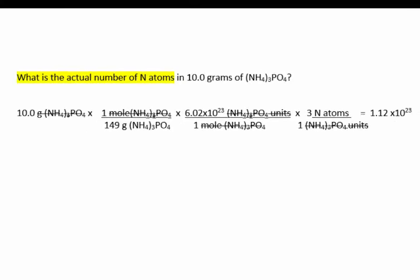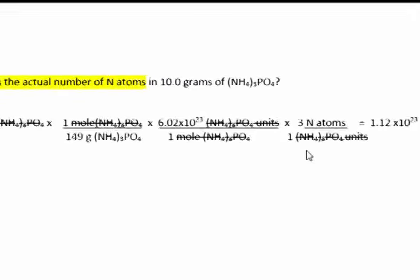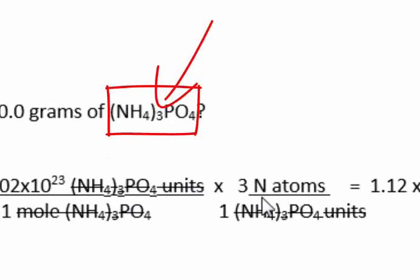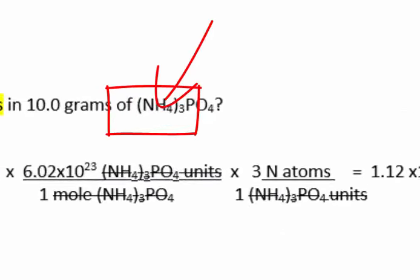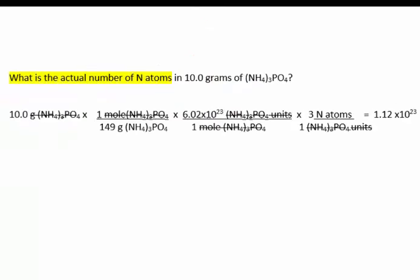What if you were asked how many nitrogen atoms are in 10 grams of ammonium phosphate? Start the same way: divide the given amount of grams by the molar mass of the compound, multiply by Avogadro's number. Now take into consideration the number of nitrogen atoms per formula unit, which is 3. The answer is 1.12 times 10 to the 23rd nitrogen atoms.